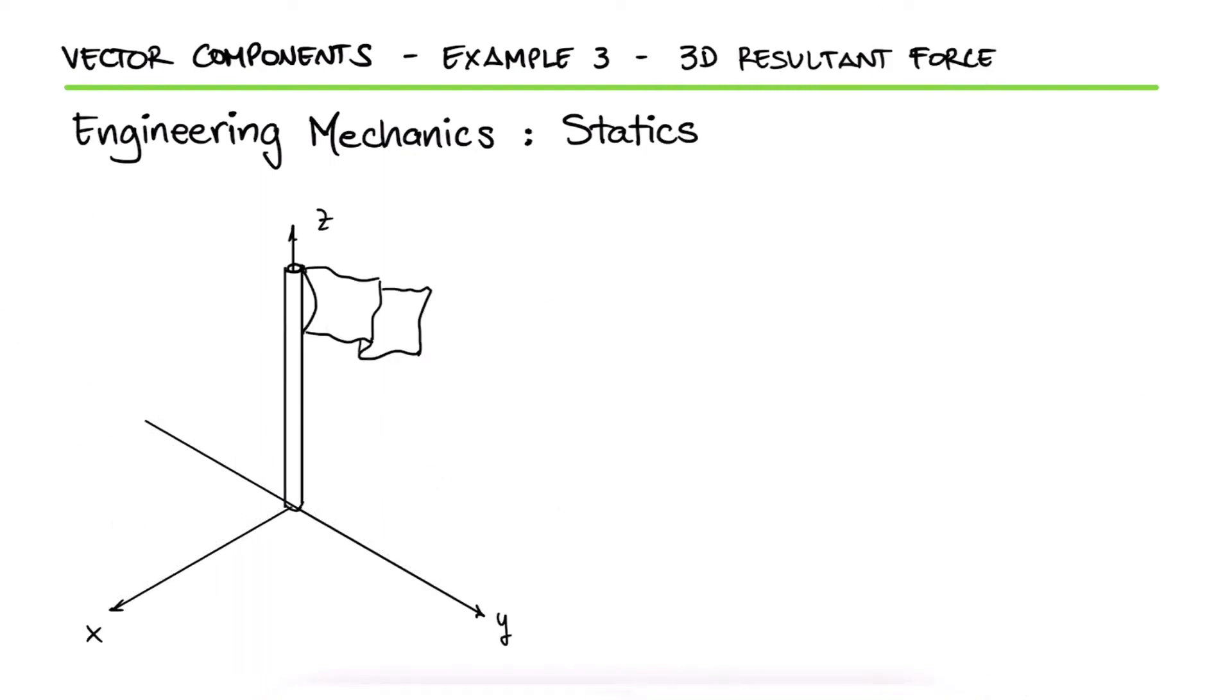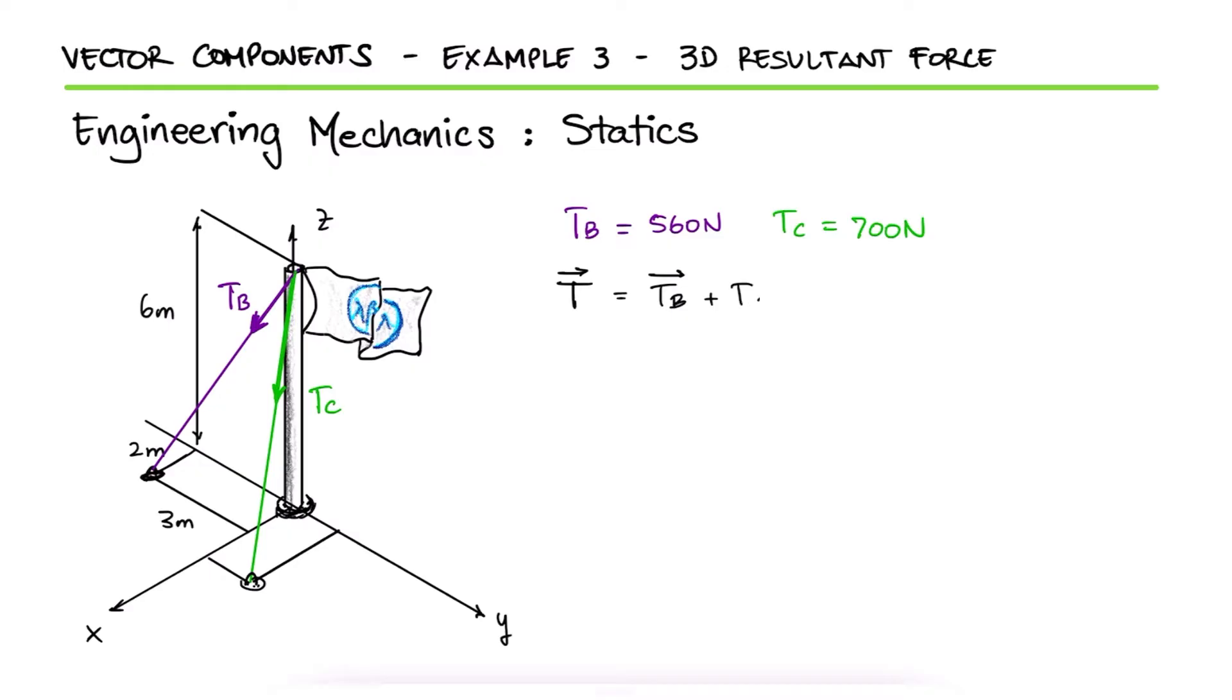If the tension force Tb is equal to 560 N and the tension force Tc is equal to 700 N, what is the magnitude and coordinate direction angles of the resultant force acting on the flagpole? This is the third example for the vector components main video. The link to that and other examples are down in the description.